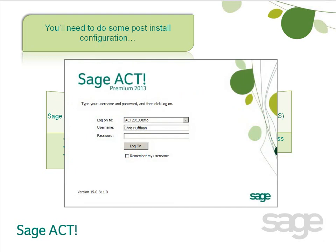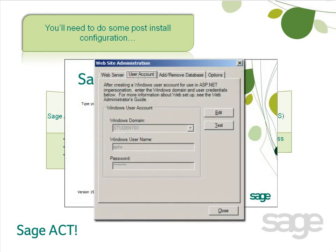If users were to attempt to access the Sajak database via a web browser, there wouldn't be a database available to log into. So you'll need to perform a couple of simple configuration steps using the Web Admin tool in the Sajak Premium Access via Web program on your server. In this tool, you'll run a couple of tests to verify your server is configured properly, and also associate a Sajak database with a site on your web server. This will enable remote users to select and log into a database on the server.